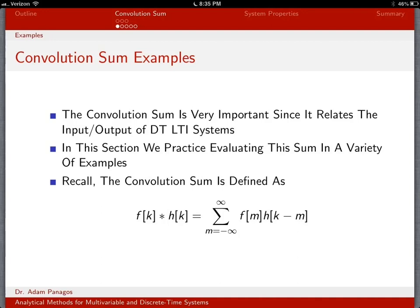Remember, the reason this is an important thing is because the convolution sum relates the input and output of a discrete time linear time invariant system. So if I know the impulse response of the system and you tell me the input, I can compute the output using the convolution sum. So we're going to start practicing evaluating this summation.